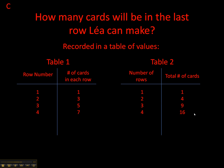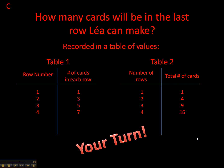Question C asks: what numbers will Leah record in table 1 and table 2 when she makes two more rows of cards? I want you to take a chance and do this yourself. If I added a 5th and 6th row, what would the numbers in those rows be in each table? Pause the presentation for a few minutes, try to figure that out, record your answer, and we'll check them in a moment.